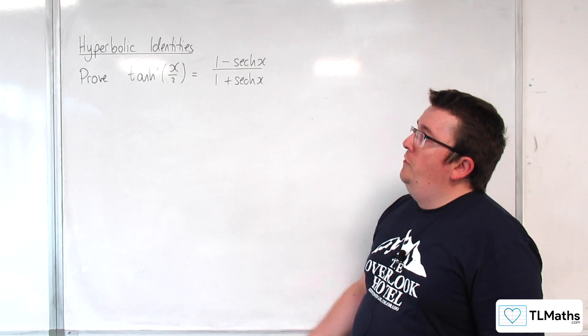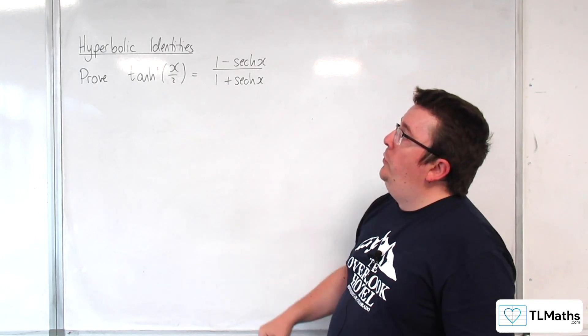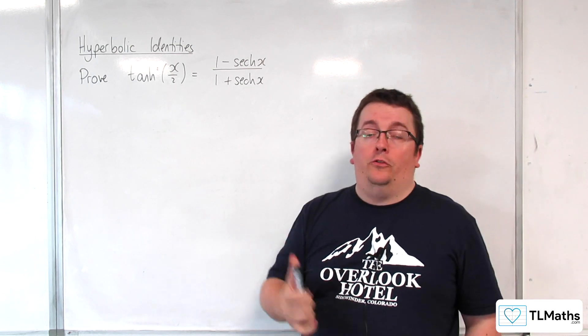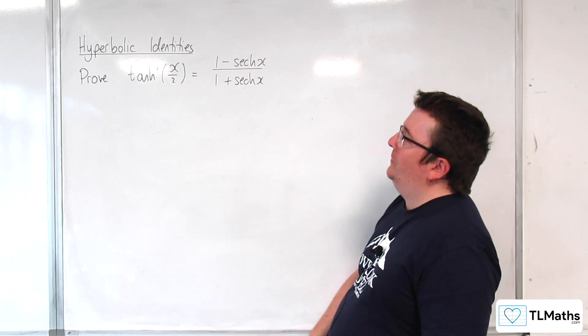In this video, we're going to prove that tan squared of x over 2 is equal to 1 minus sech of x over 1 plus sech of x.